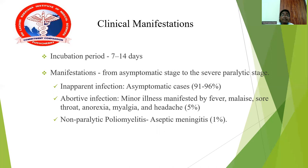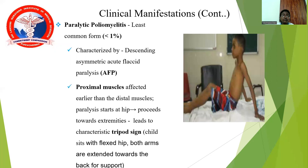Aseptic meningitis, called non-paralytic poliomyelitis, occurs in 1% of cases. Paralytic poliomyelitis is less than 1% and is the least common form. It is characterized by descending asymmetric acute flaccid paralysis (AFP). The proximal muscles are affected first, then distal muscles, so paralysis starts at the hip region and proceeds toward the extremities, leading to the characteristic tripod sign — the child sits with fixed hips and both arms extended backward for support.